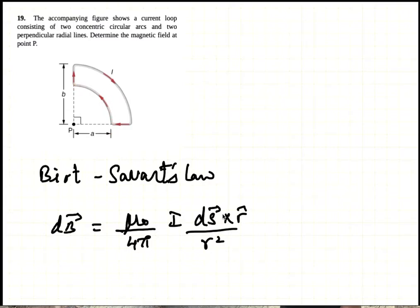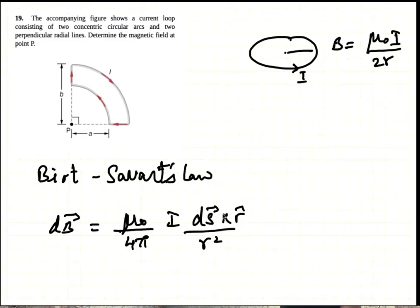Now these are part of a circle. The field produced by a circular loop of current at the center is given by B = μ₀I/2r, where r is the radius of the circle. And if the current is going like that, the field will be according to your right hand rule. Stick your thumb out in the direction of the current, and the field will be in that direction coming out of the paper.